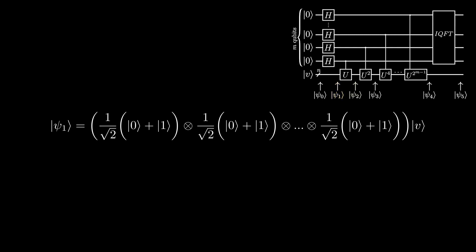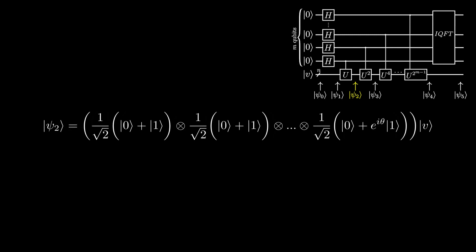At ψ₂, we apply the U gate to the eigenvector V with the rightmost qubit in the first register as the control. Since V is the eigenvector of U, phase kickback occurs, which adds a relative phase of e^(iθ) to the qubit.